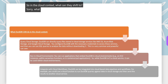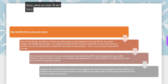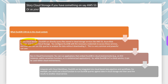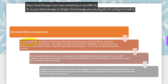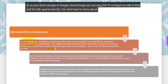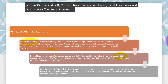So what can DuckDB do in a cloud context? If you have data on AWS S3, Azure Blob Storage, or Google Cloud Storage, you can connect DuckDB to query that storage and fire SQL queries directly — no need to load the data. It can also run in cloud environments like AWS Lambda functions.